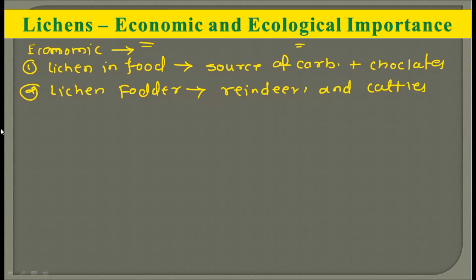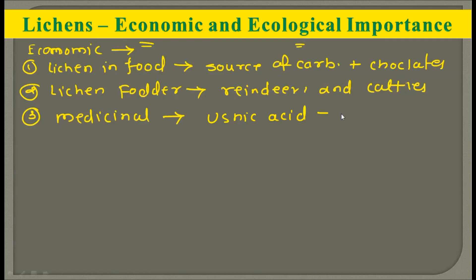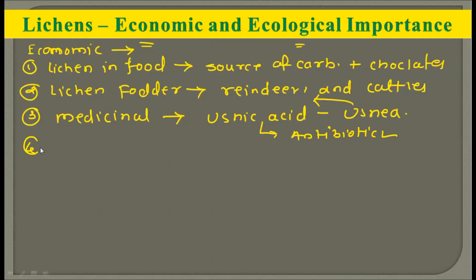The next economic importance of lichens is their medicinal properties. There are some medicinally important lichens — usnic acid is obtained from Usnea (which we have seen as a type of fruticose lichen). This Usnea gives the compound called usnic acid which is medicinally important and used as an antibiotic. So lichens also have importance in the medical industry.